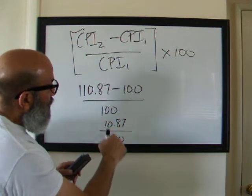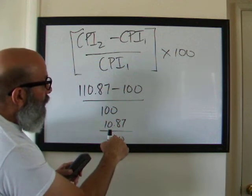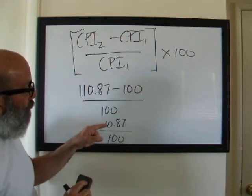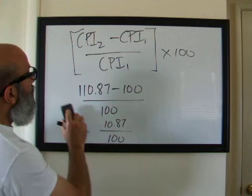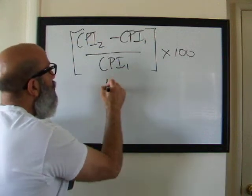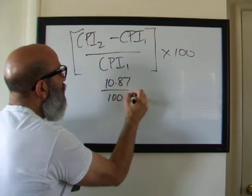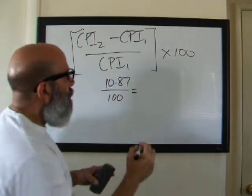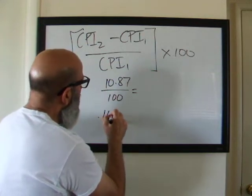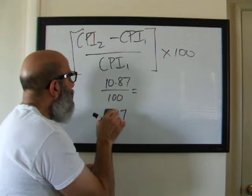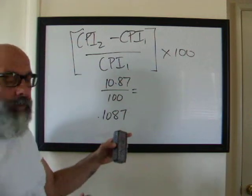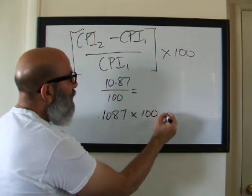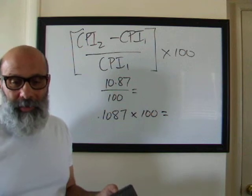Now I'm going to take this, I still have to do this math and then I have to multiply it times 100. So I'm going to take 10.87 divided by 100. So 10.87 divided by 100, that's going to equal 0.1087. Now I'm going to take this and multiply it times my 100 and that's going to give me my actual inflation rate.